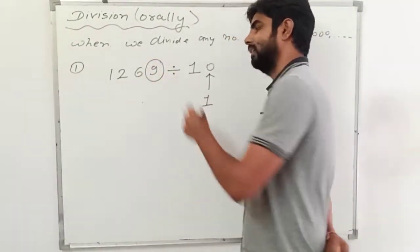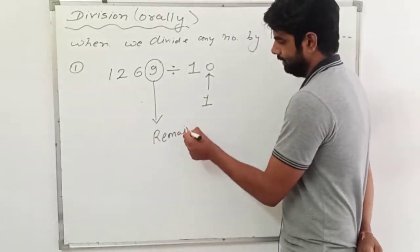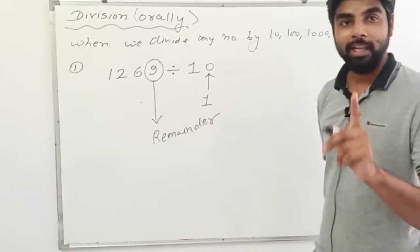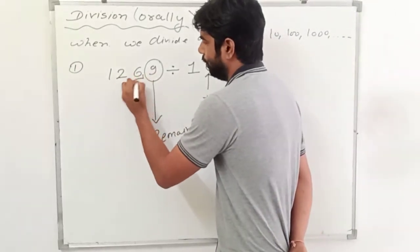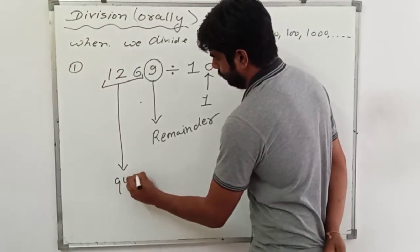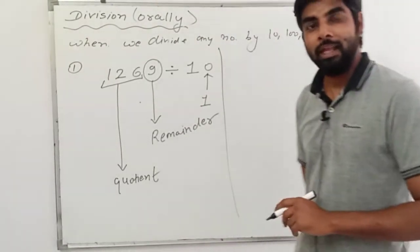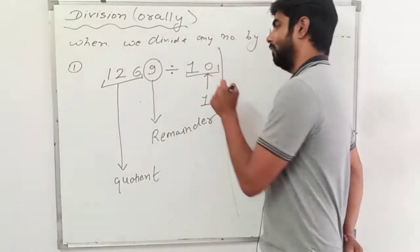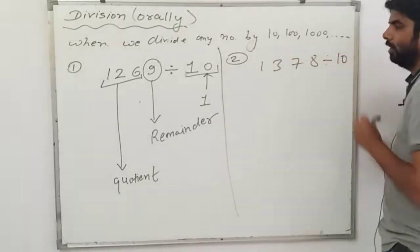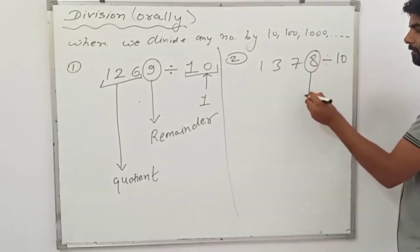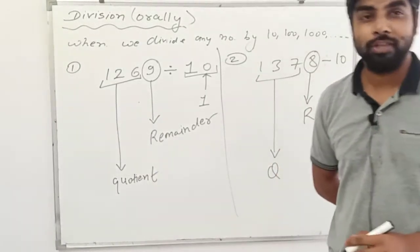Since there is one zero, we take one digit from the right — that digit becomes our remainder. So 9 is our remainder, and the rest of the digits, 126, become our quotient. This is how you can divide orally without doing any calculations. For example 2: 1378 divided by 10 — the last digit becomes the remainder and the rest becomes the quotient. You can solve this in 3 to 5 seconds.